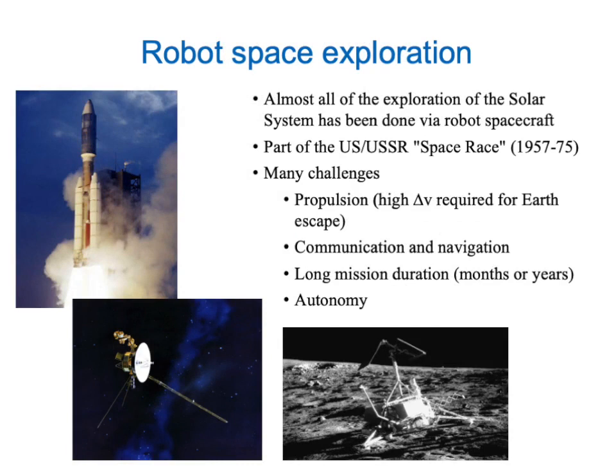Which brings us to robot space exploration, where we send our robots beyond Earth orbit. Almost all of the exploration of the solar system beyond Earth orbit has been done via robot spacecraft. And in the 1960s and 70s, this was very much a part of the space race between the United States and the Soviet Union. If you want to send a robot to another planet, you are facing a lot of challenges. For one thing, you're facing a challenge of propulsion.